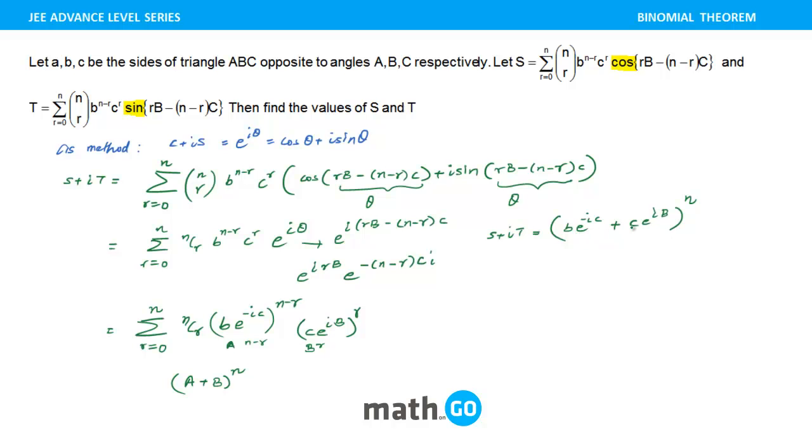Now for S and T, you need to find the real and imaginary part of the RHS. So if we just go on and write, this is what, yes, this is cos C minus iota sin C. Can I say something like this, right? And similarly, this will be what? This will be C cos B plus C sin B and this is whole raised to power n.